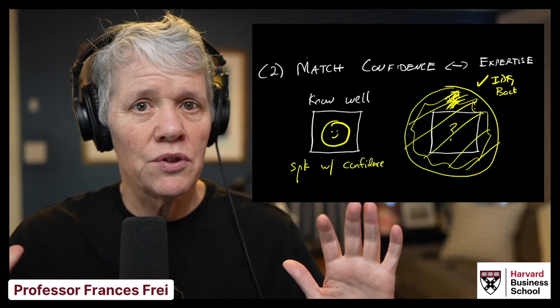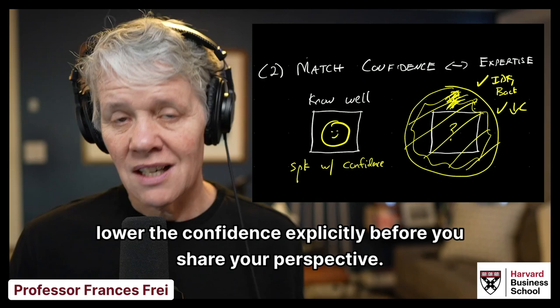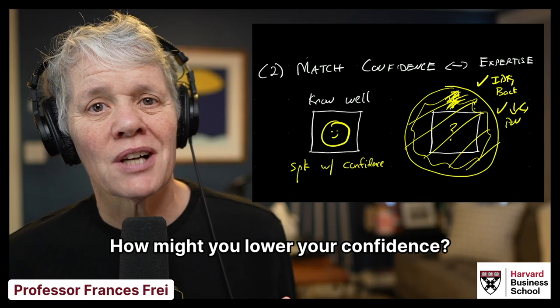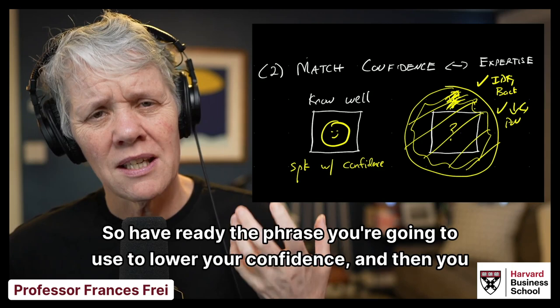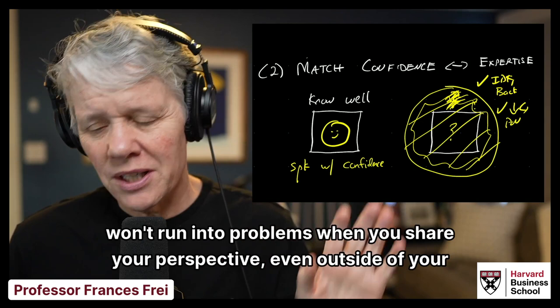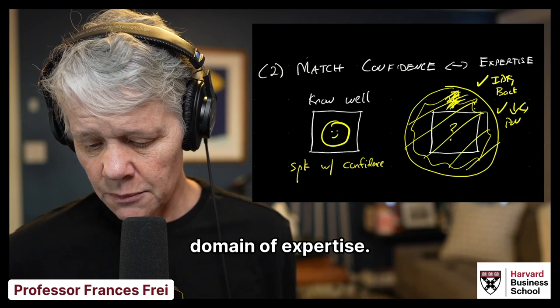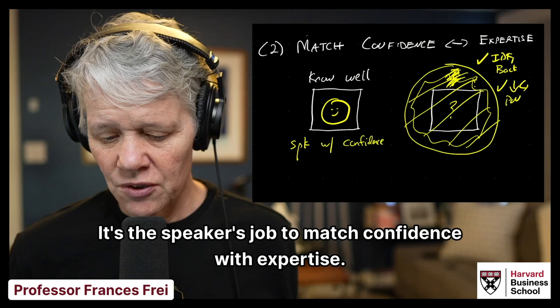Another strategy is lower the confidence explicitly before you share your perspective. How might you lower your confidence? When I do it, I use phrases such as it might be, here's an initial hypothesis, in my experience. So have ready the phrase you're going to use to lower your confidence, and then you won't run into problems when you share your perspective, even outside of your domain of expertise. It's the speaker's job to match confidence with expertise.